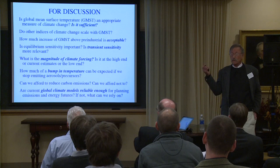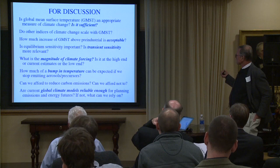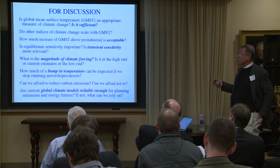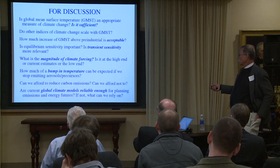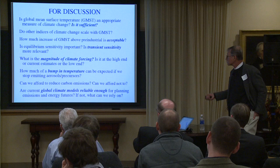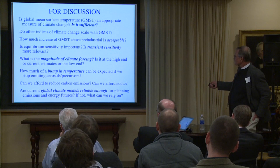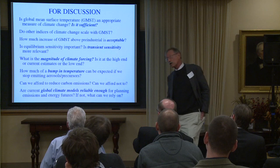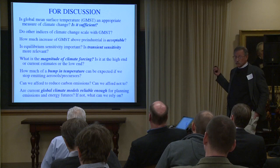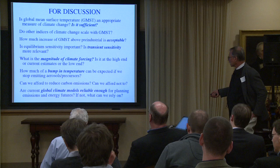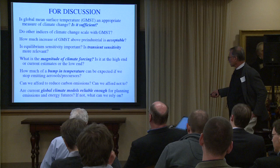I didn't put up a conclusion slide, but here's a for-discussion slide. Is the global mean surface temperature an appropriate and sufficient measure of climate change? Do other indices of climate change scale with global mean surface temperature? I think they do — the models tend to say that they do. How much increase of global mean surface temperature above pre-industrial is acceptable? That's subjective. Is equilibrium climate sensitivity important, or is transient sensitivity more relevant? What is the magnitude of forcing? That is the big question — that's what we've been doing our research on over the past several decades. How much of a temperature bump can we expect if we stop emitting aerosols and their precursors today — hypothetically? Can we afford to reduce carbon emissions, what will it do to our economy, or can we afford not to? And are the current climate models reliable enough for planning emissions reductions, and if not, what can we rely on?